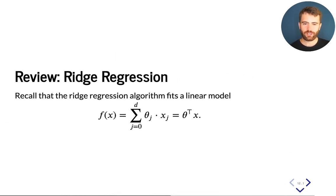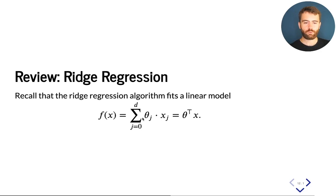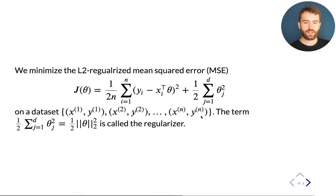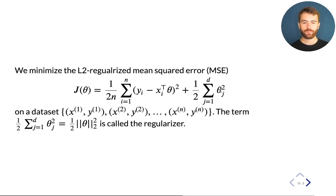The algorithm I want to derive as a special case of the MAP approach is ridge regression. Recall that in ridge regression, we are fitting a linear model where we have inputs x and our estimate of the target is a linear model — theta dot product with x. The ridge model fits an L2 regularized mean squared error: on one side we have our mean squared error, and on the other side we have a regularizer which is the L2 norm of the parameter vector theta, forcing theta to be small.